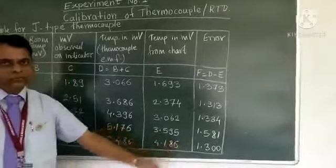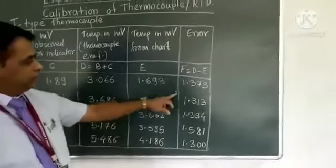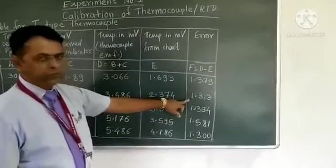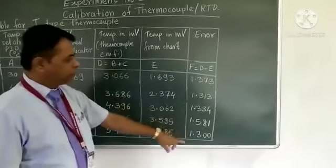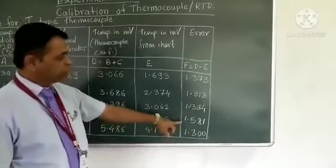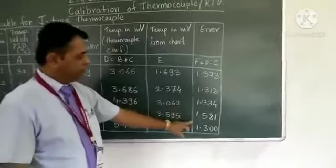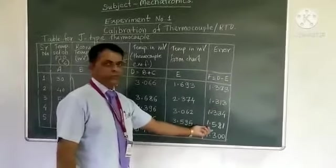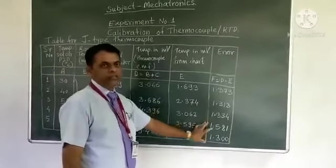And the difference is written in the error column, that is F column. You can see the readings. The difference is constant: 1.373, 1.313, 1.334, 1.300. So the reading variation is near about 1.3 to 1.5 in the range. So it is nearly constant.